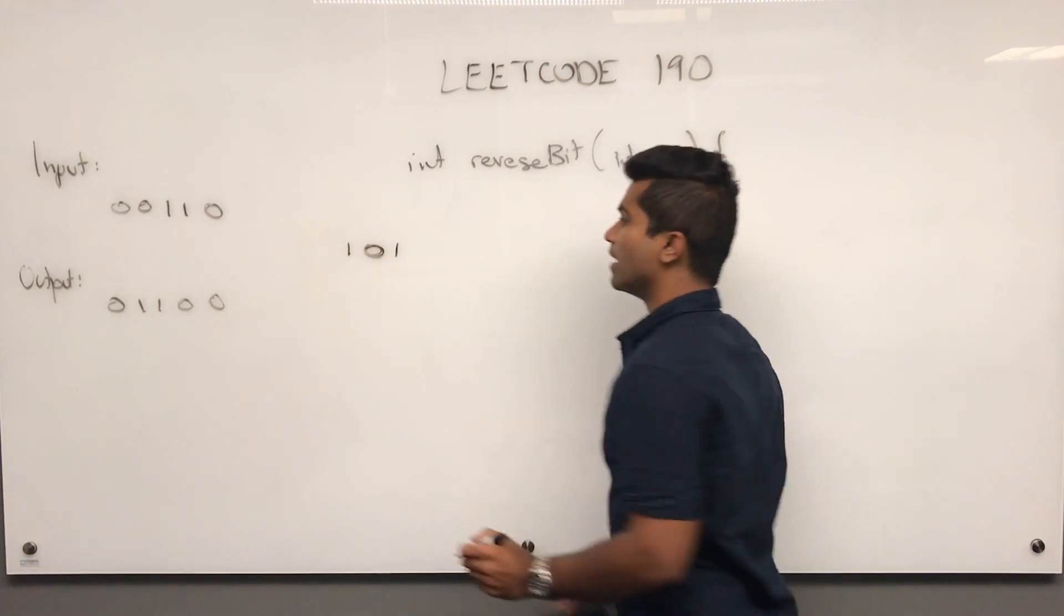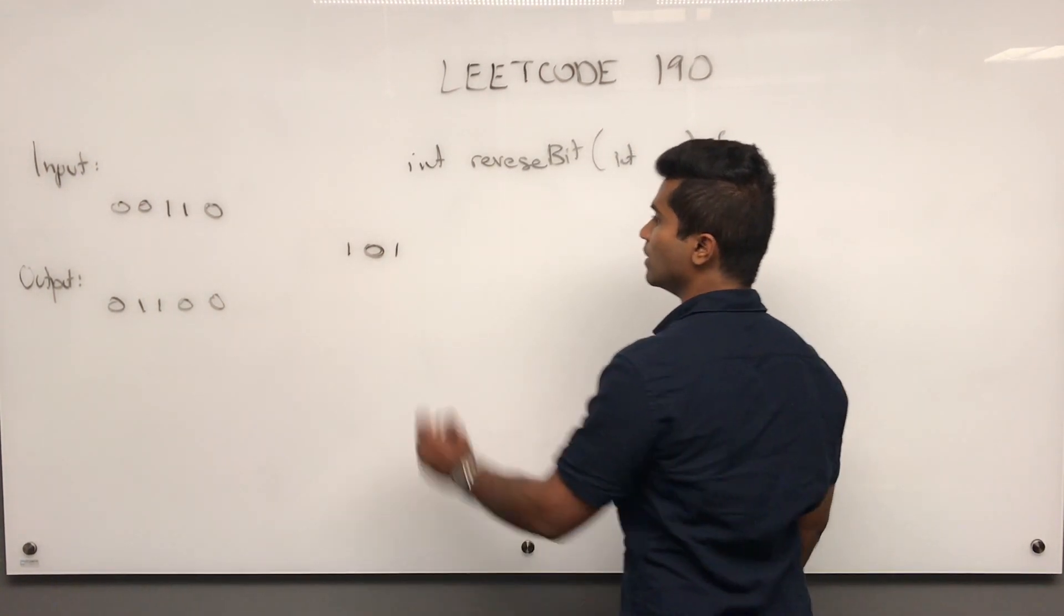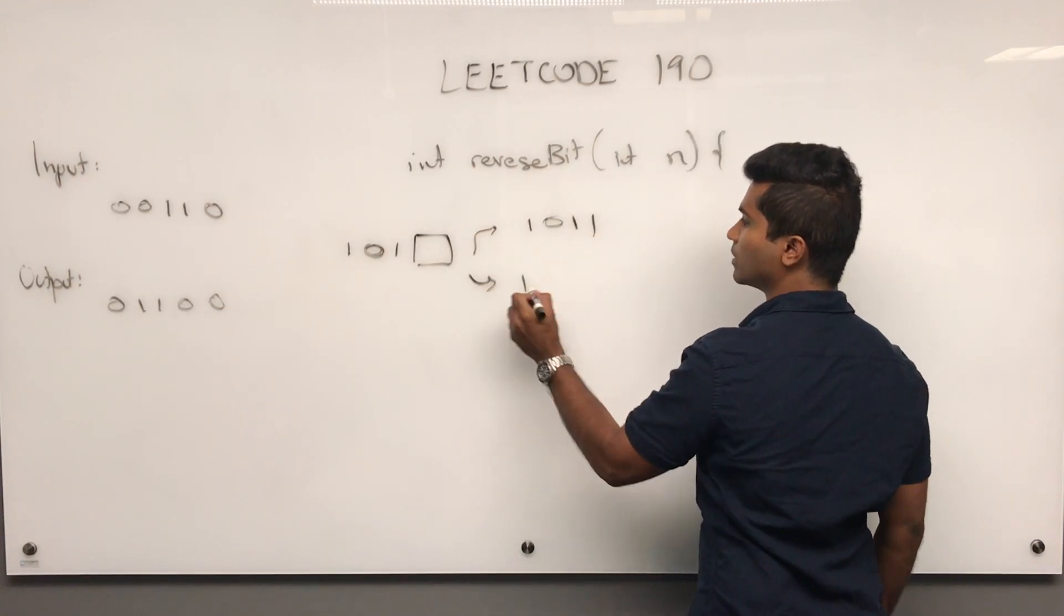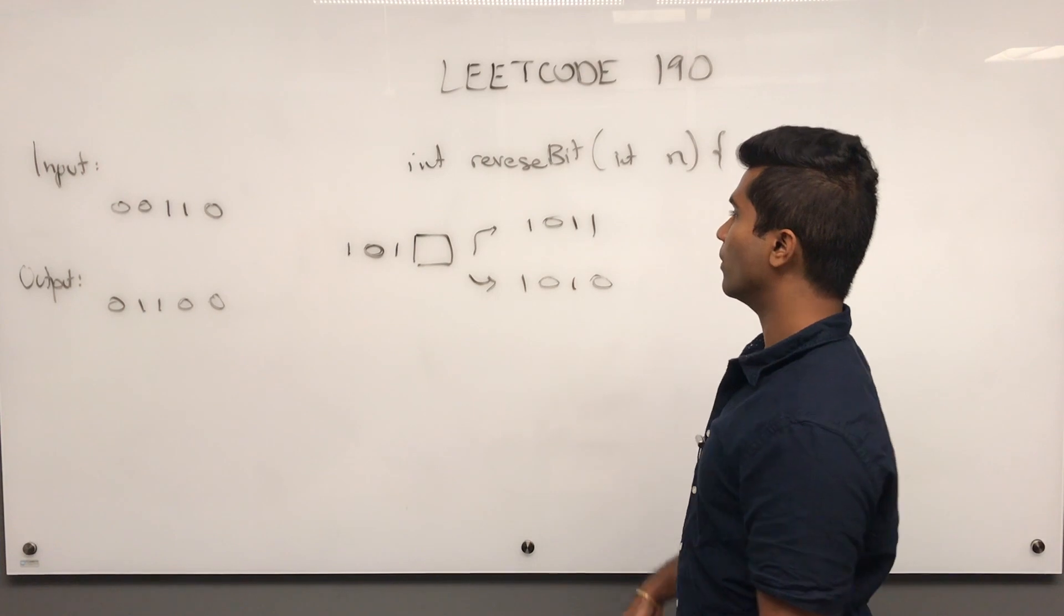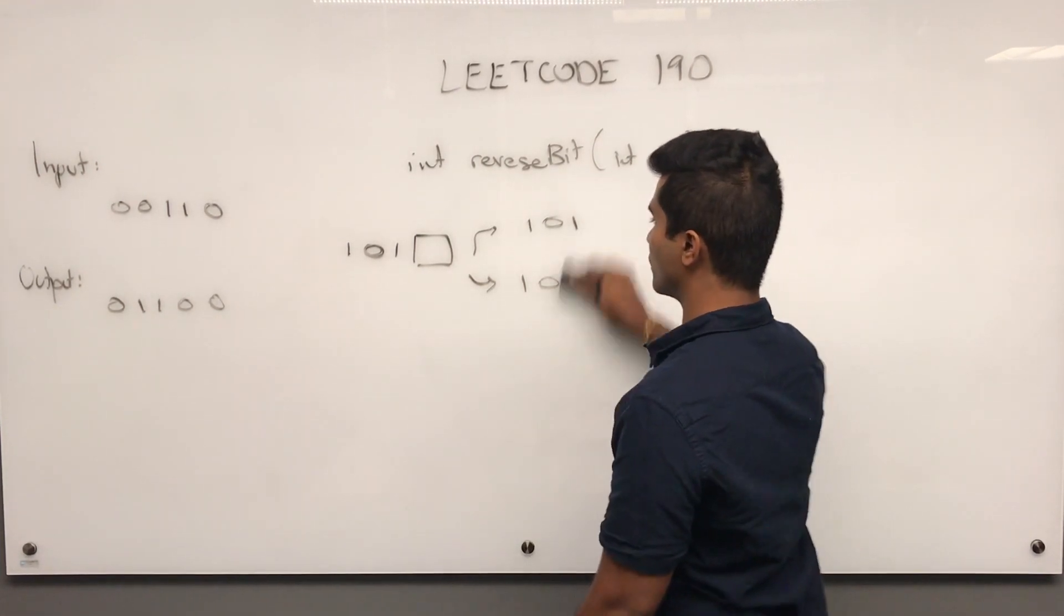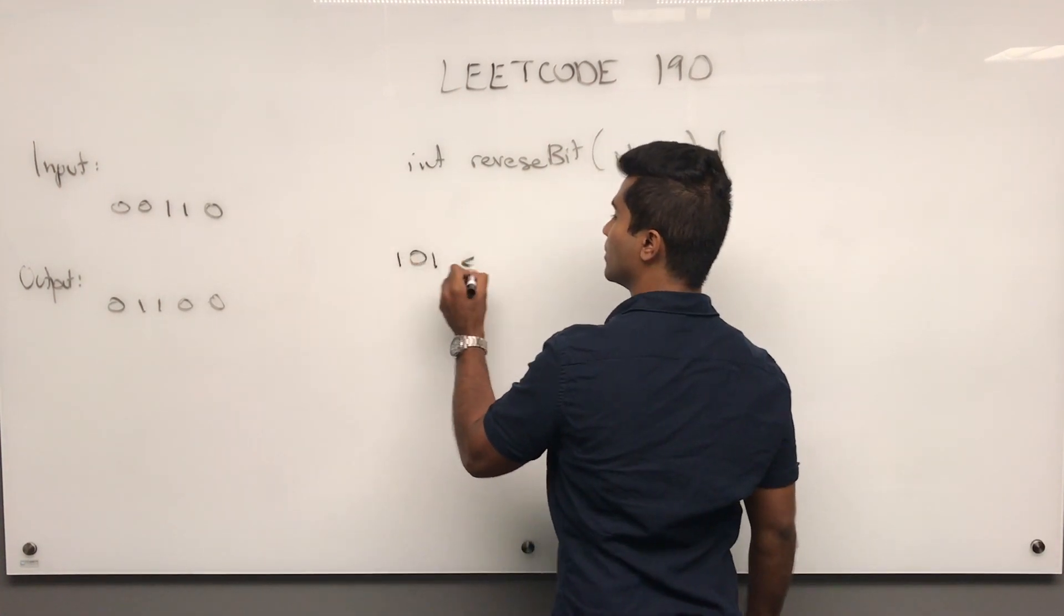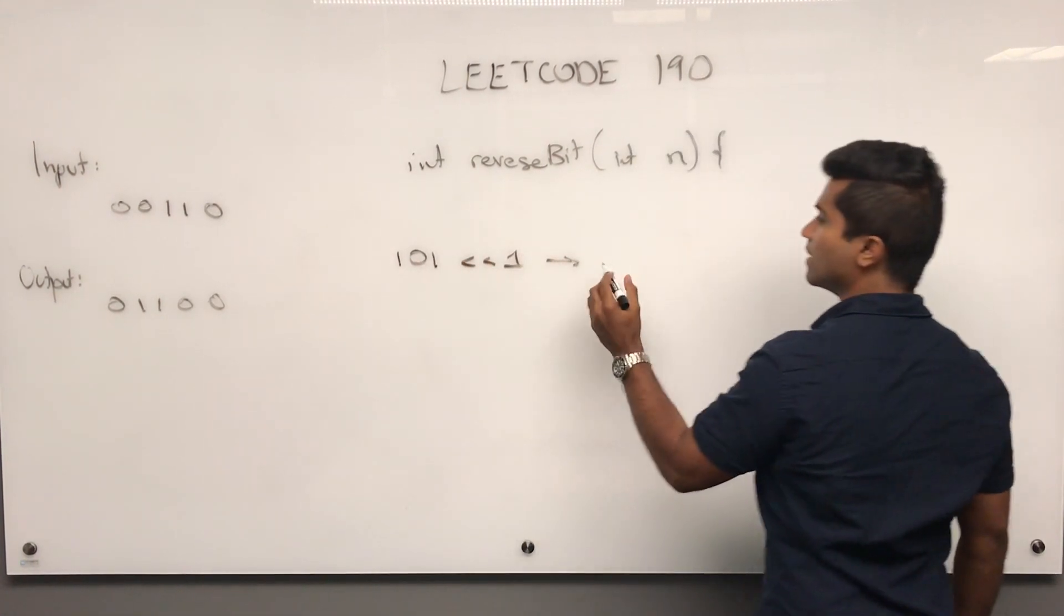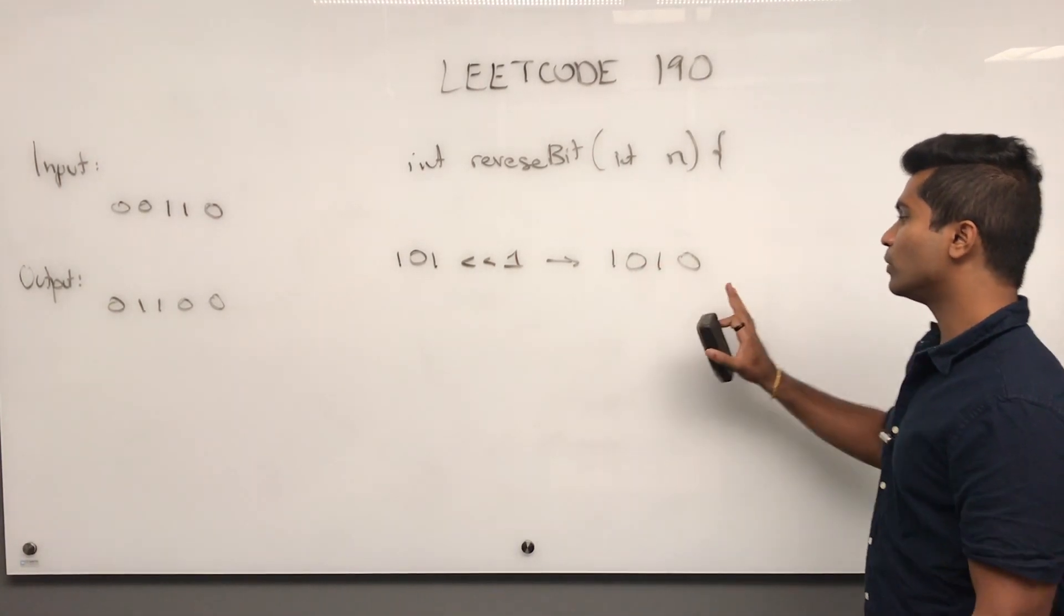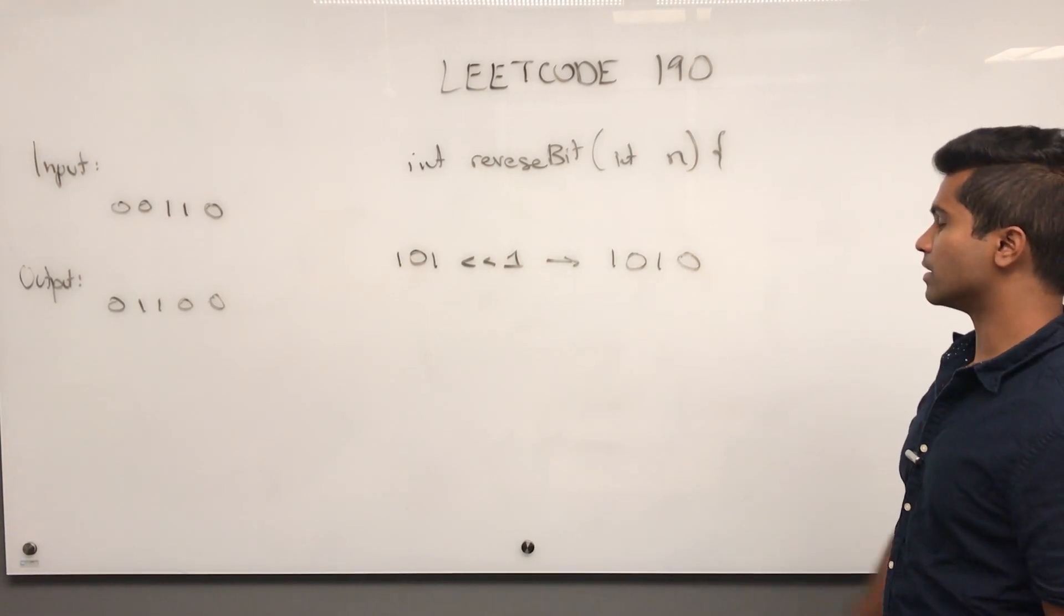Say I have 1, 0, 1 and I want to introduce a new bit on the right side. I can make it 1, 0, 1, 1 or 1, 0, 1, 0. Either way, I need to push this over to the left first. After moving it left, the number will look like this.